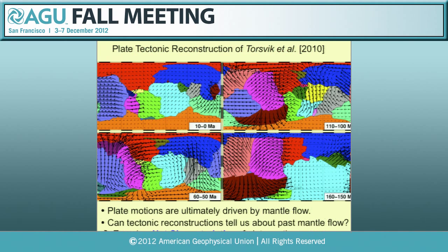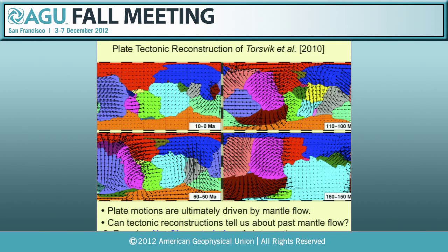This cross-section across Africa and the Pacific shows a large-scale upwelling flow pattern that seems to rise from the large low-slow-velocity provinces observed on the core-mantle boundary. We'd like to know what mantle flow patterns were like in the past, but we don't have tomography from past times. What we do have from past times is plate tectonic reconstructions.